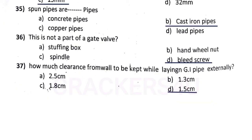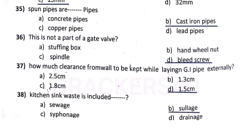Question number thirty-five: how much clearance from wall is to be kept while laying GI pipe externally — answer option D, 1.5 centimeter.